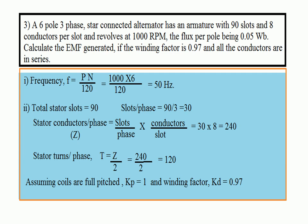Next problem: A 6-pole 3-phase star-connected alternator has an armature with 90 slots and 8 conductors per slot, revolves at 1000 RPM, and the flux per pole is 0.05 webers. Calculate the EMF generated if the winding factor is 0.97 and all conductors are in series.